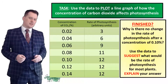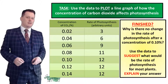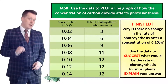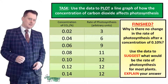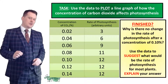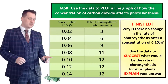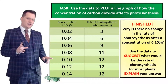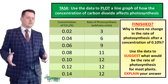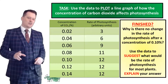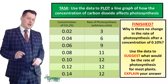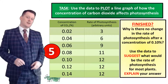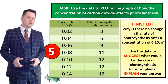Our next task is best completed on graph paper. Plot a line graph showing how the concentration of carbon dioxide affects the rate of photosynthesis — remember to label those axes and have a sensible scale. For a challenge, explain why there is no further increase in photosynthesis after the CO2 concentration gets above 0.1%, and suggest what the rate of photosynthesis would be for most plants outside. You may need to think back to what concentration of CO2 is in the atmosphere.